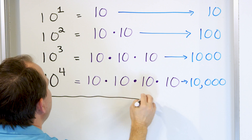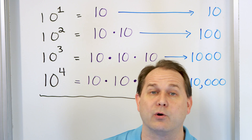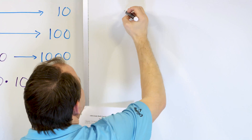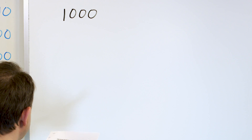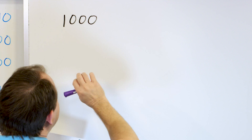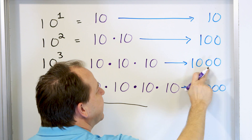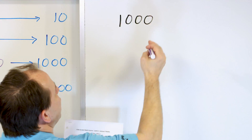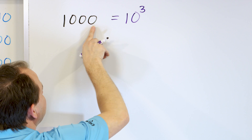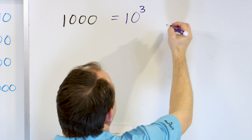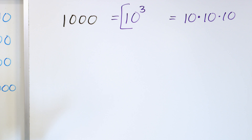Now that we know what powers of ten really mean, let's do some problems. Problem one: convert the number one thousand to a power of ten. Remember the pattern — one thousand is just ten to the power of three because there are three zeros at the end. It's the same as ten times ten times ten. So we write it as ten to the power of three. When you multiply these together, you get one thousand.